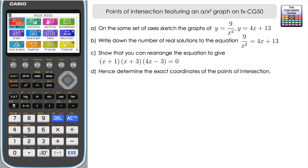Let's have a look at part a: on the same set of axes, sketch the graphs of y equals 9 over x squared — that's our a-over-x-squared graph — and y equals 4x plus 13, which is going to be a straight line. So let's draw this on the calculator.